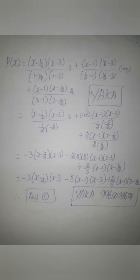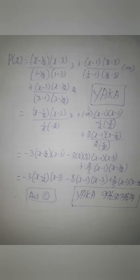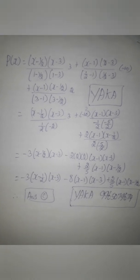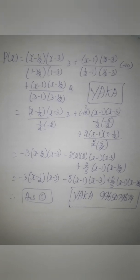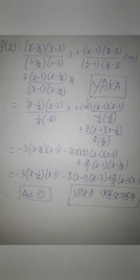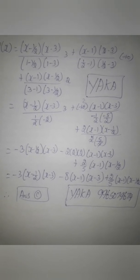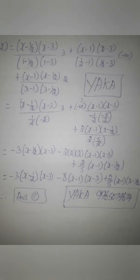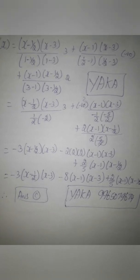Now, P of x equals x minus x1, x minus x2 divided by x0. x0 is equal to 1. 1 minus 1 by 2, 1 minus 3, y0 is equal to 3. In this form, x0 is 1, x1 is 1/2.